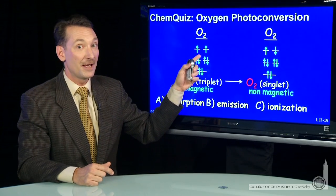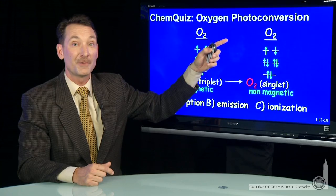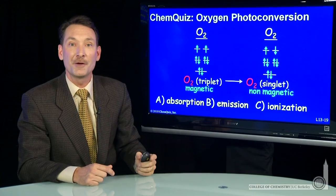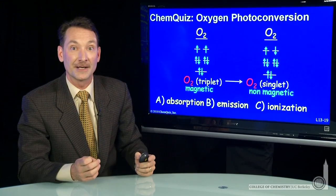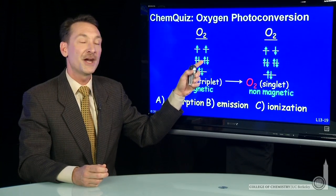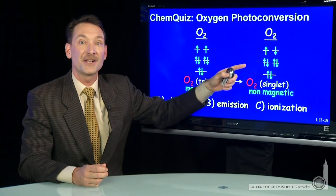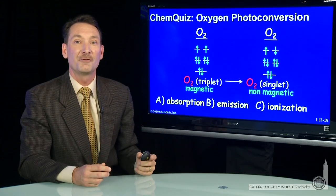An ionization event won't allow you to go to a diamagnetic species. If you remove an electron from paramagnetic oxygen, you still have an unpaired electron, and it's still paramagnetic. The only question is, when I go from spins parallel to spins anti-parallel, I flip that spin, is this final state higher energy or lower energy?